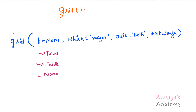The next parameter is which, with a default value of major. We can take which as major, minor, or both. This parameter tells which grid lines to apply changes on. In grid lines we have major grid lines and minor grid lines. So if you want to change the color of the grid lines, you can change the color of only major grid lines, only minor grid lines, or both.